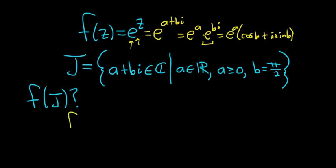So let's go ahead and write down f of J. By definition of f of J, this is simply the set of all elements of the form f of z such that z is an element of J. That's the definition of f of J, right? So now we can start filling stuff in.